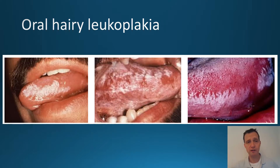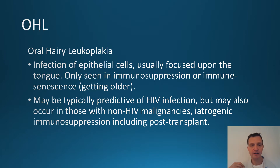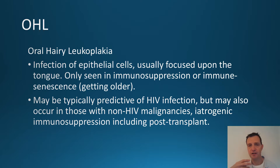These pictures show what oral hairy leukoplakia looks like — it affects usually the outer surface of the tongue. It typically occurs when you are immunosuppressed or immunosenescent, meaning your immune system is declining with age. If you're relatively young and developing this, and you've been on steroids for a long time, or you're post-transplantation, or you have any of the symptoms shown previously, you need to get tested for HIV. A biopsy may also be needed, especially if your HIV test is negative.